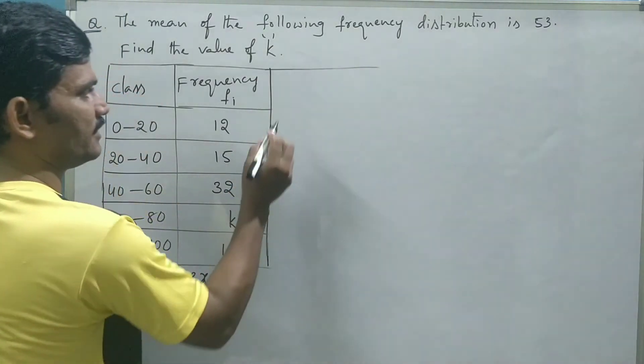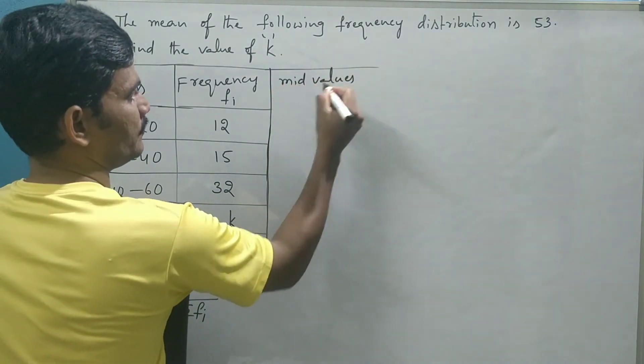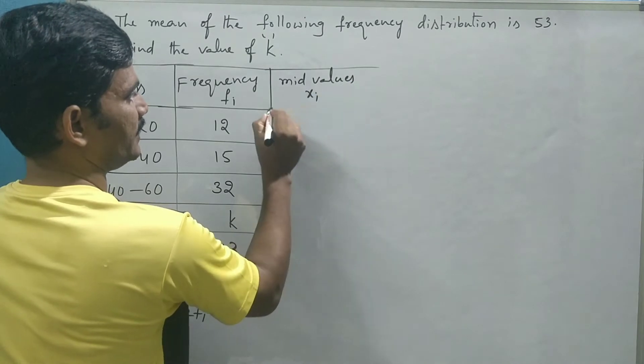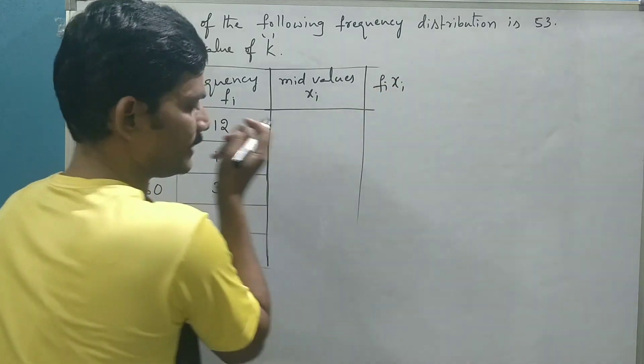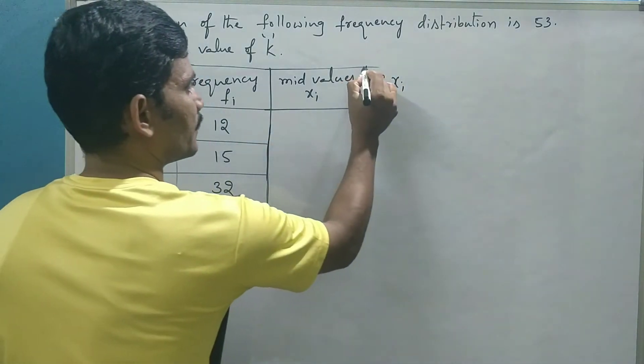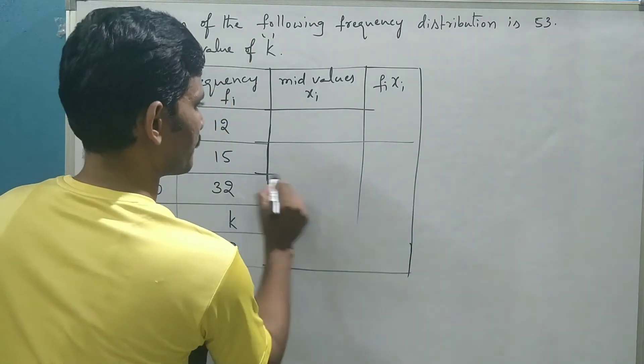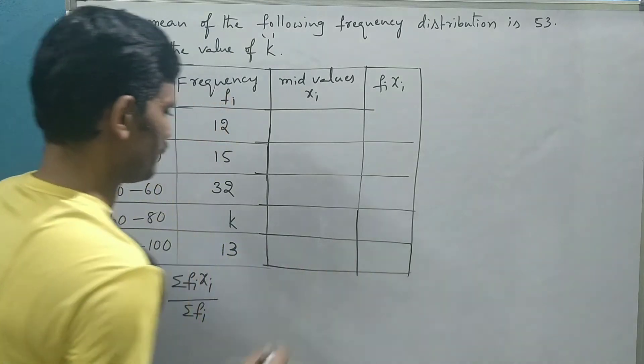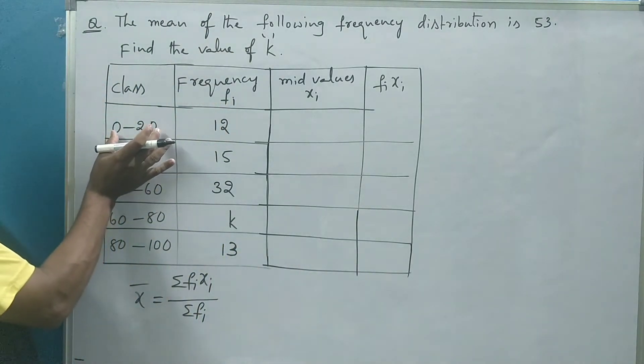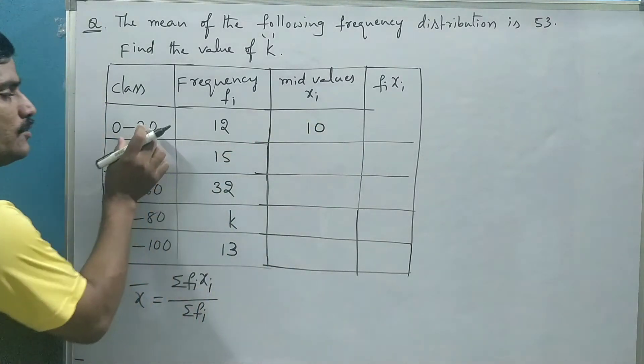What we need? We need class marks or mid values, xi, and product of frequency and corresponding class mark. Now, what is mid value of this class interval? 0 to 20. Average of these two limits. It is 0 plus 20 by 2, 10.